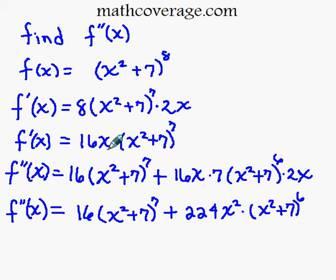Now we'll need to use the product rule. So f double prime of x equal to, so we take the derivative of 16x, that's 16, we rewrite the second part, x squared plus 7 raised to 7, plus,